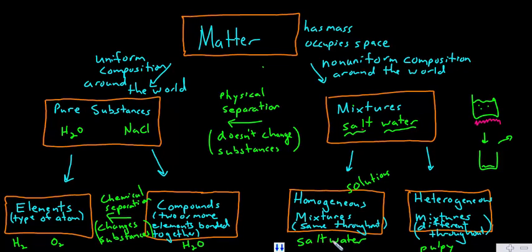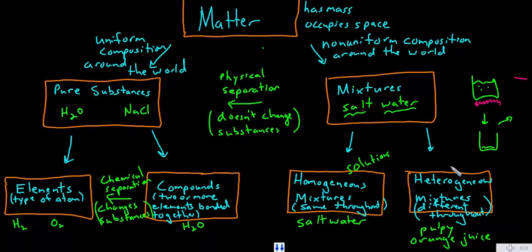They look the same throughout. If you look with your eye, they look the same. Whereas heterogeneous mixtures, they look different throughout. For example, pulpy orange juice - part of it is solid, part of it is liquid. Or trail mix: part of it is M&Ms, part of it is raisins. Soil.